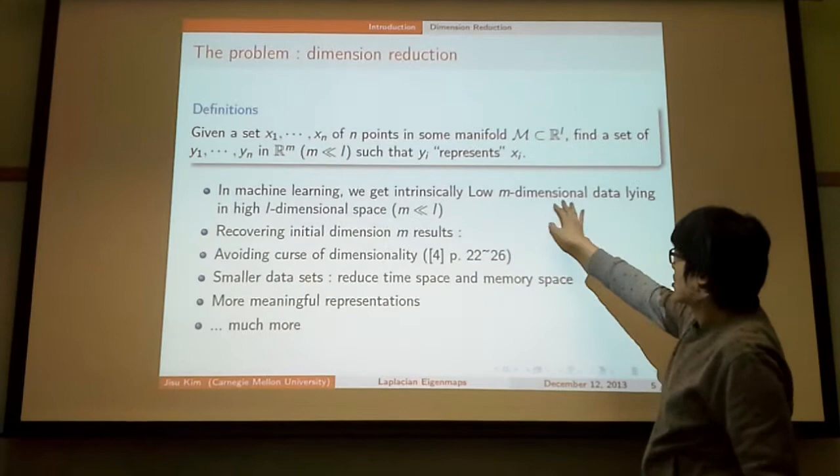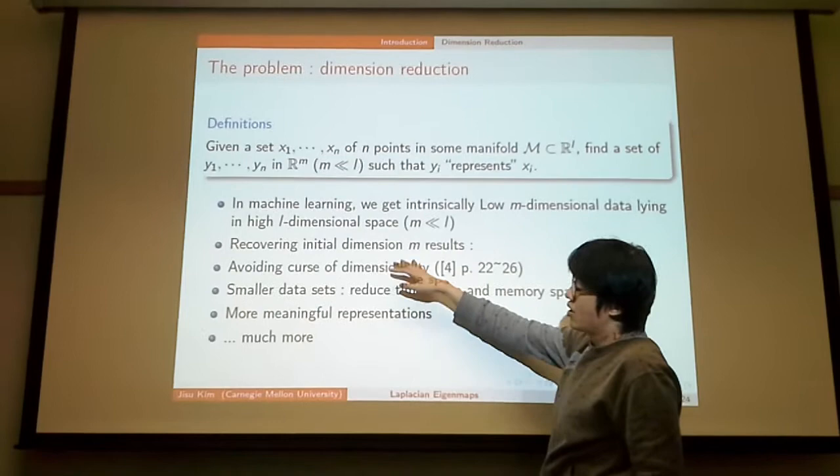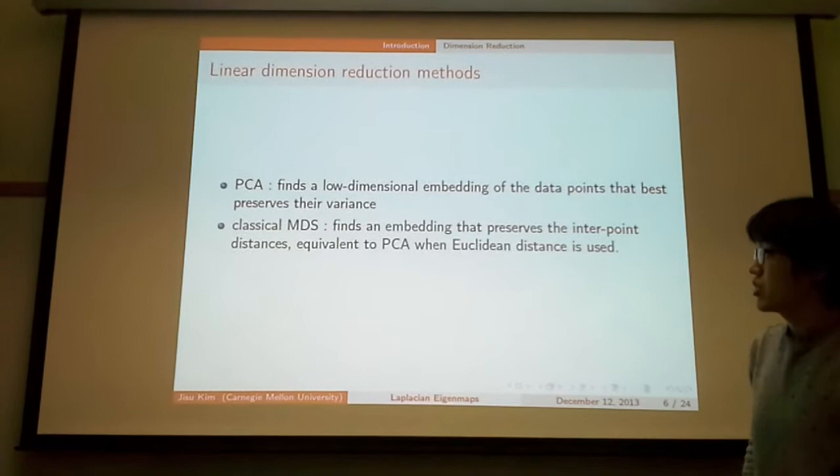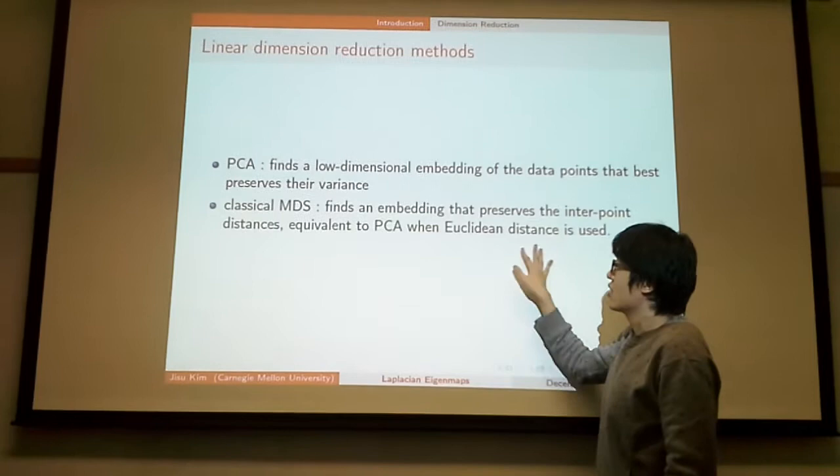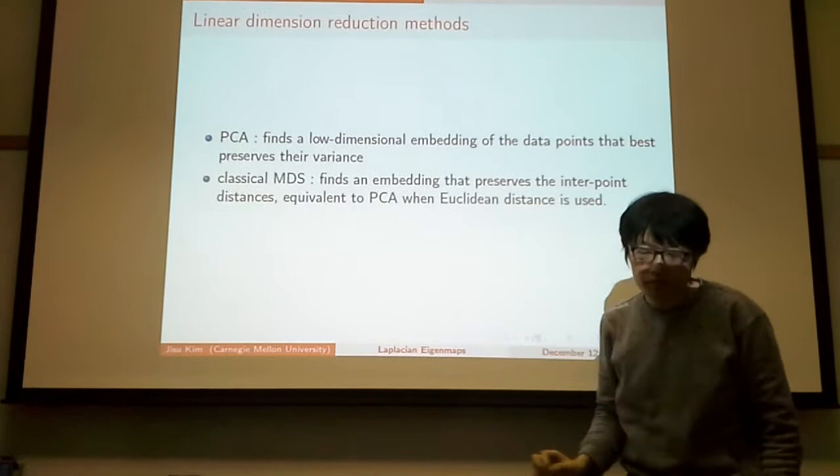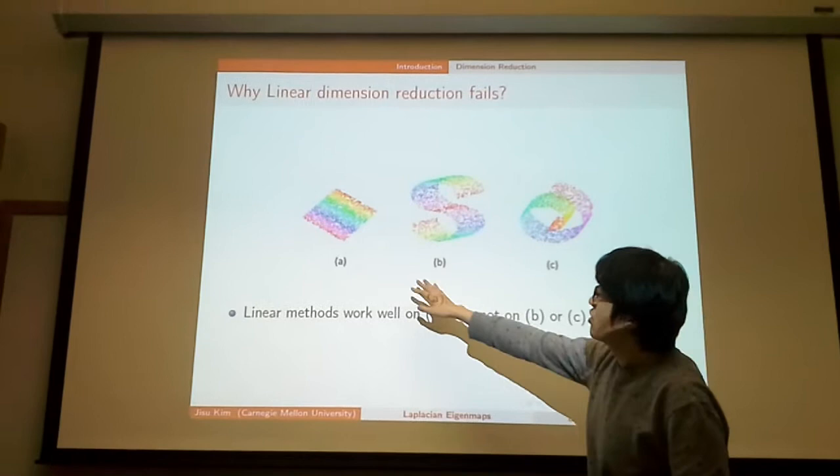In machine learning, we get intrinsically low-dimensional data lying in high-dimensional space, with m much smaller than capital M. Recovering the initial data dimension m has many advantages. There are several classical ways to do that, such as PCA or classical MDS. Both methods are finding some linear space that approximates your data. They sometimes work very well, but they sometimes fail. So why do linear dimension reduction methods fail?